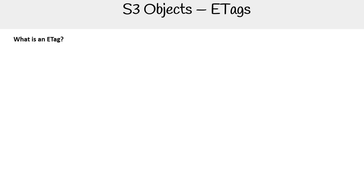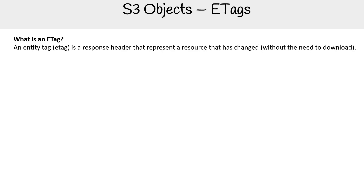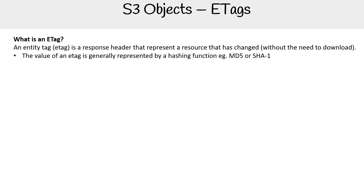Let's talk about ETags. ETags stands for identity tag, and it is a response header that represents a resource that has changed without the need to download. The value of an ETag is generally represented by a hashing function, such as MD5 or SHA-1. ETags are part of the HTTP protocol, so it's not an AWS-specific thing — it's just a broader concept of HTTP.